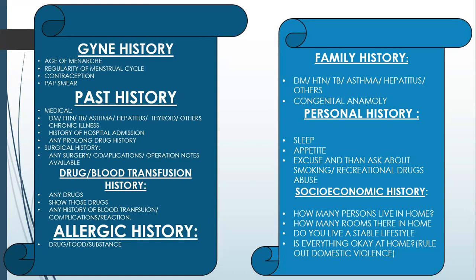In the personal history, ask about sleep and appetite patterns. Excuse the patient, say sorry, and ask whether there is any history of smoking or recreational drug abuse. However, in countries where smoking or recreational drugs are not prohibited, you do not need to excuse. In the socioeconomic history, ask the patient how many rooms are in the home, how many persons live there, whether they live a stable lifestyle, and if everything is okay at home. This is to rule out domestic violence — the most important step in socioeconomic history.